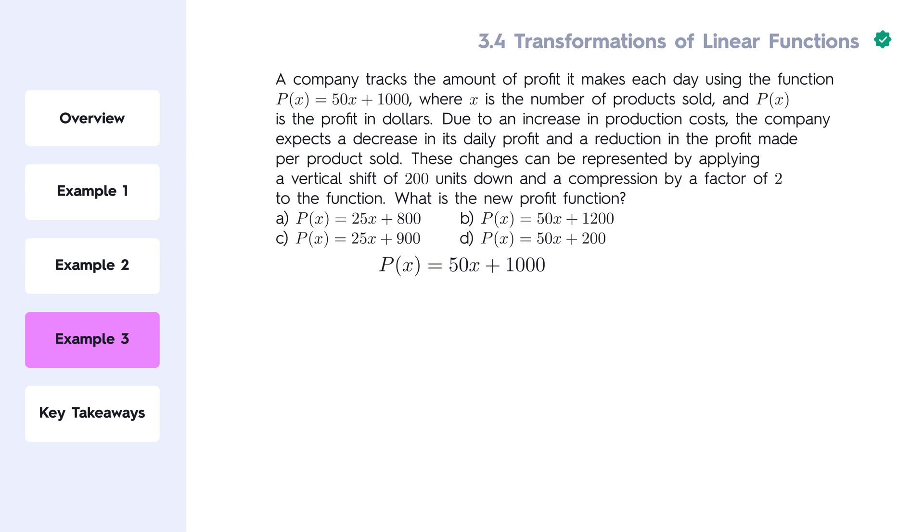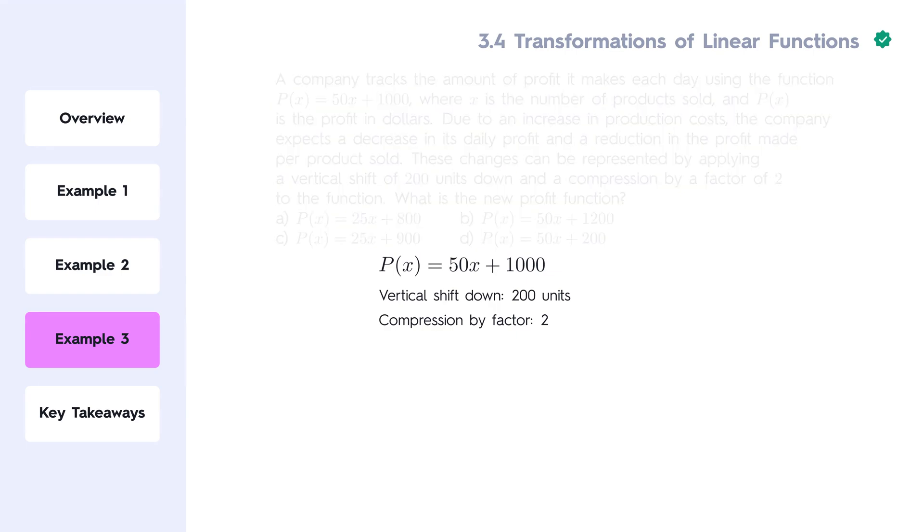We are applying two transformations here: a vertical shift downward and a compression. The vertical shift moves the entire graph down by 200 units, while the compression means we will reduce the slope of the line, compressing the profit per unit sold by a factor of 2.